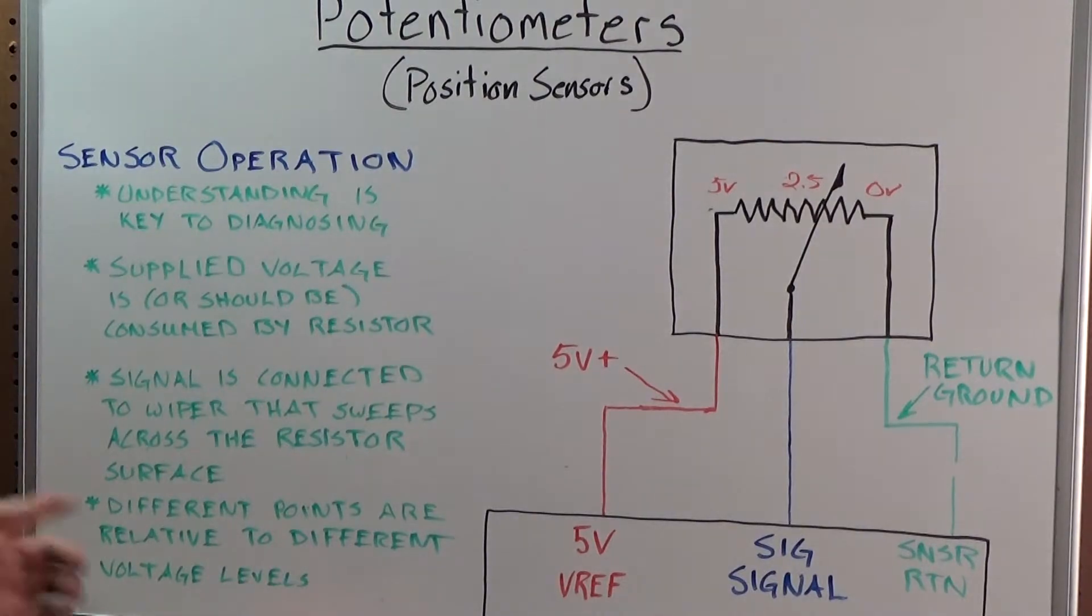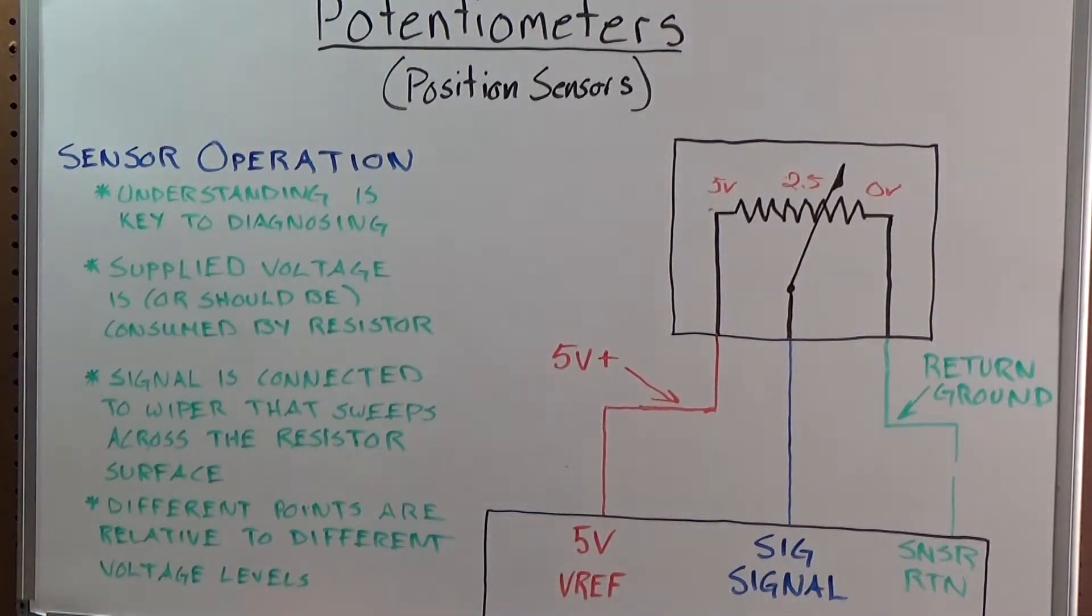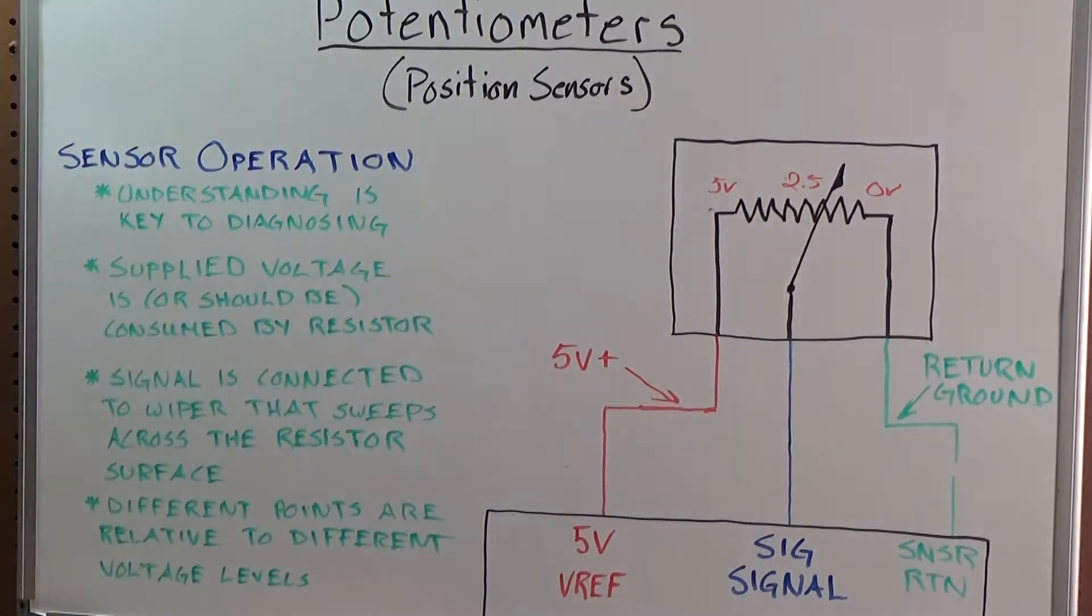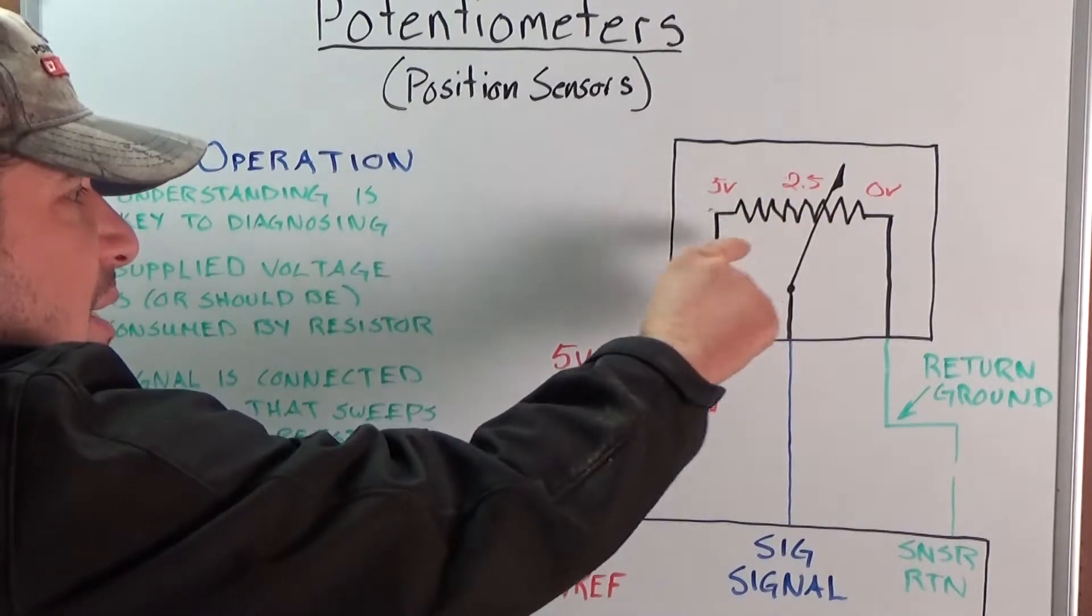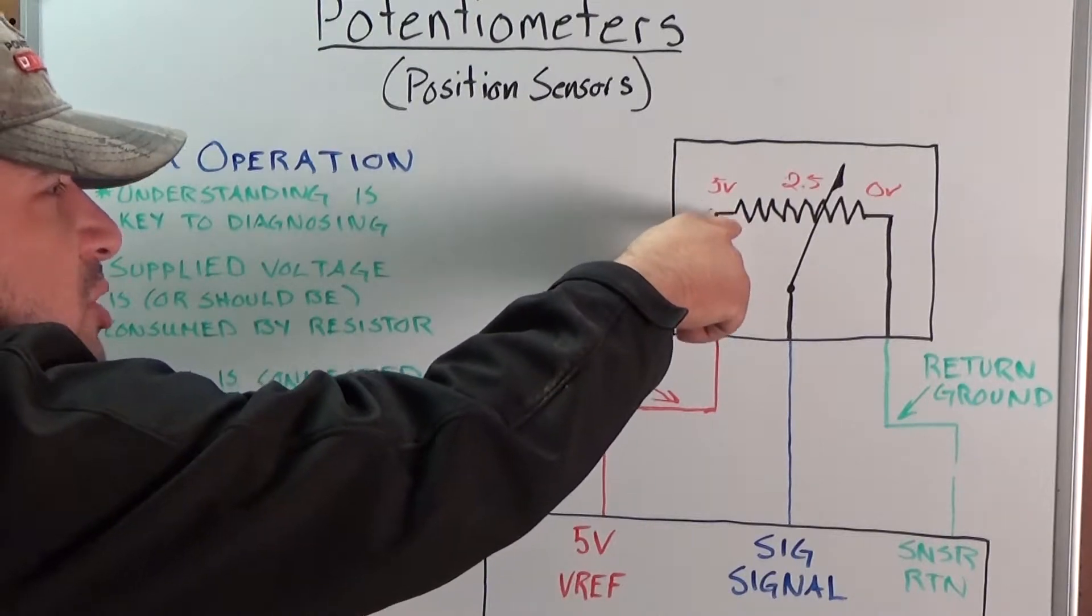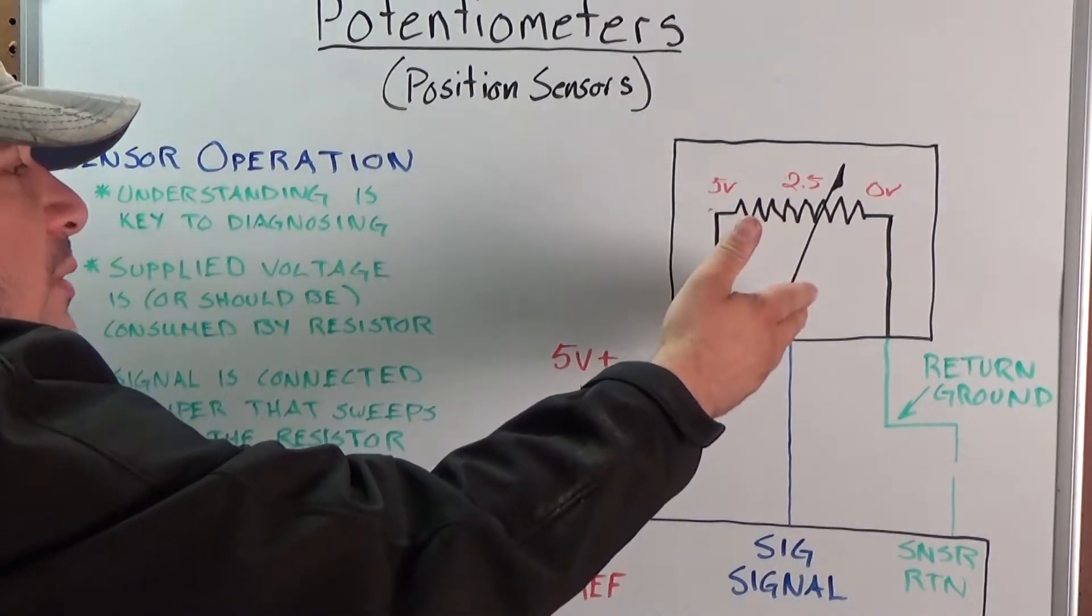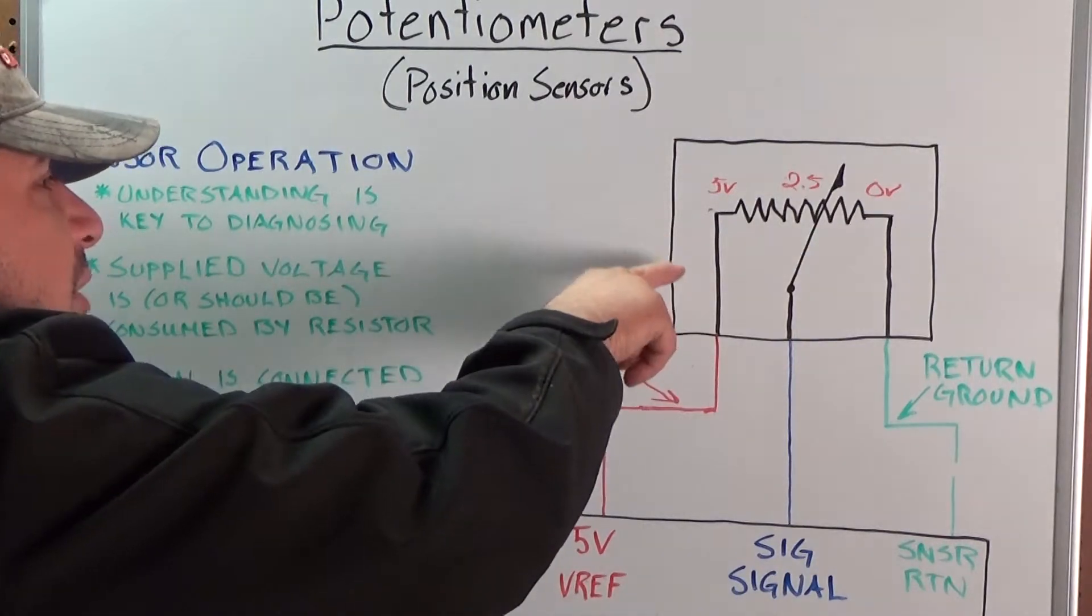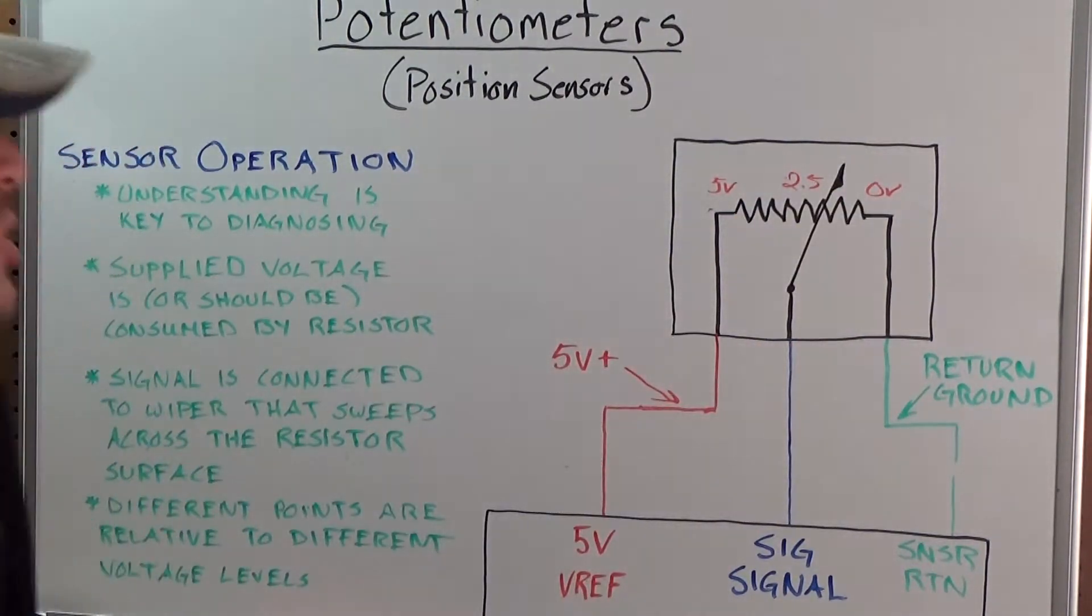The signal wire is connected to the wiper, that's what we talked about, it's right here. It moves with whatever the component is and it sweeps across the resistor surface from one end of the sensor to the other. And then different points here relate to different voltage levels. As I said, if you were all the way right here at the very beginning, you would still have five volts because it hadn't gone through any of the resistor yet. About halfway through, it's gone through about half of the resistor, so you'll have about 2.5 volts of your five left. And then if you were all the way over here at the end, you would have gone through all of the resistor and then you would have zero volts left and that's what your signal would be showing.